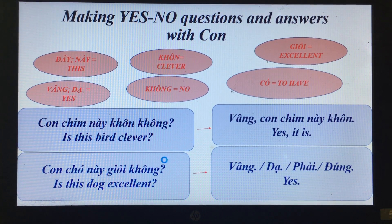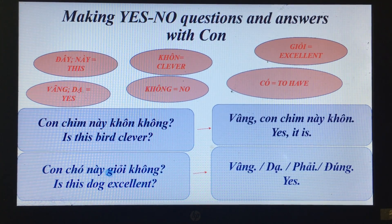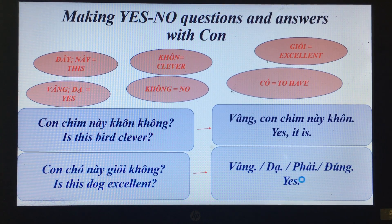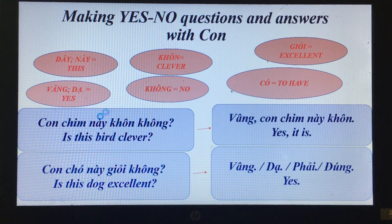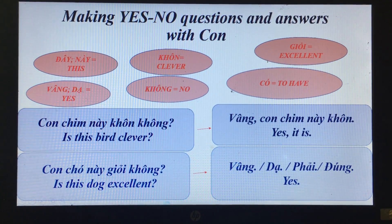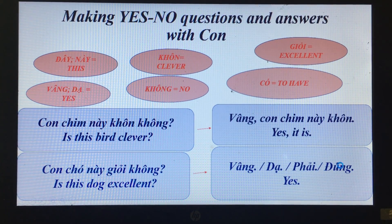'Con chó này giỏi không?' — Is this dog excellent? You can answer: 'vâng', 'dạ', 'phải', 'đúng' — all mean yes. Read again: 'Con chim này khôn không?' — 'Vâng, con chim này khôn.' 'Con chó này giỏi không?' — 'Vâng, dạ, phải, đúng.'